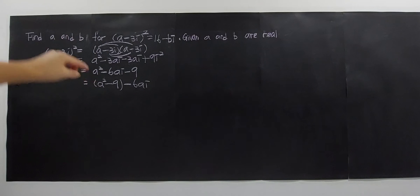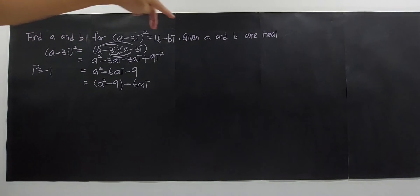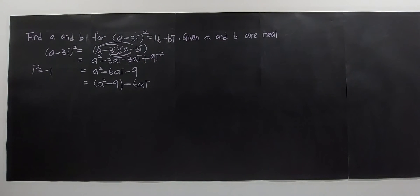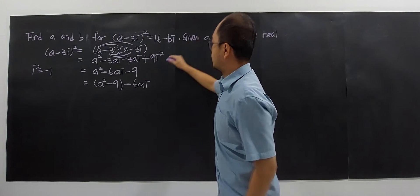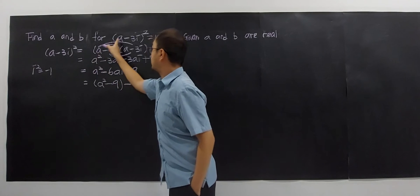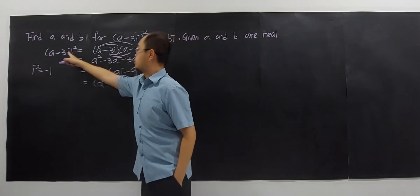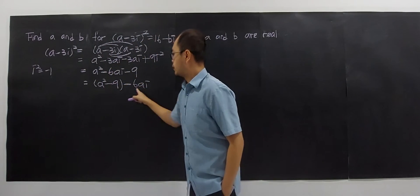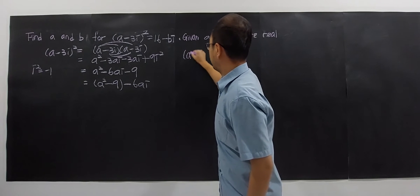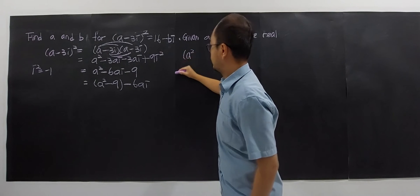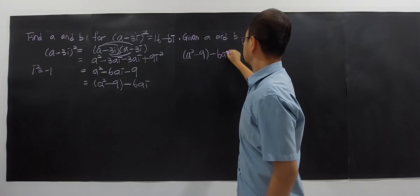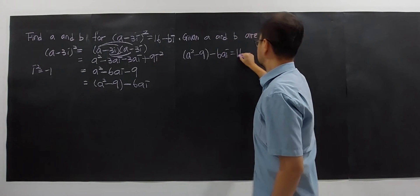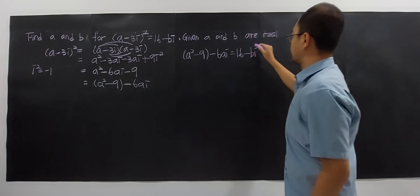Now I'm going to set this equal to the right hand side. This one equals this one, which means the expanded form also equals the right side. So I have A squared minus 9, minus 6ai, equals 16 minus bi.